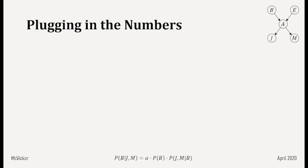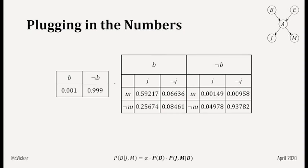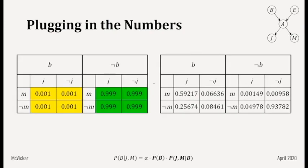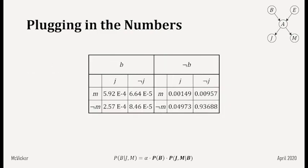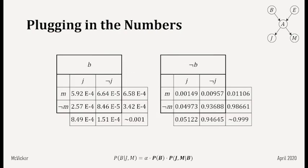Final operation: P(B) times P(J,M|B). We have three variables — J, M, and B — and P(J,M|B) already has those three dimensions, so we just expand P(B) along J and M dimensions. After element-wise multiplication, the entire probability distribution sums to one — this is P(B,J,M). We plug this in at the bottom and rearrange so that B is the first dimension, J is second, and M is third.